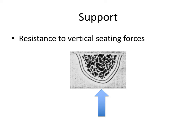The first term we'll talk about is support. The definition for support is resistance to vertical seating forces. This picture is a cross-section of the edentulous ridge or the alveolar ridge, and this arrow is representing the force vector of the forces referred to in the definition — vertical seating forces against the soft and hard tissues of the dental arch.